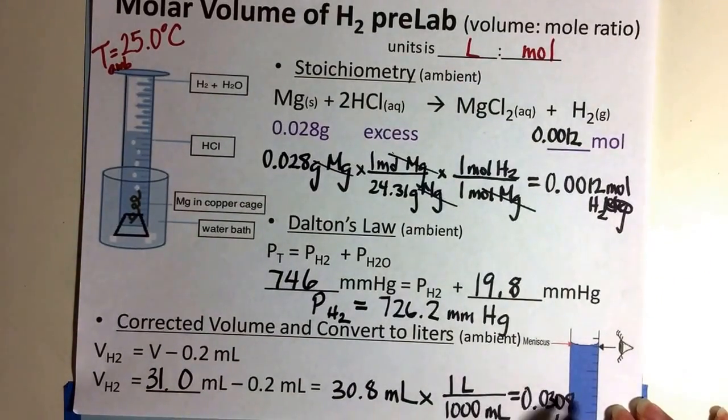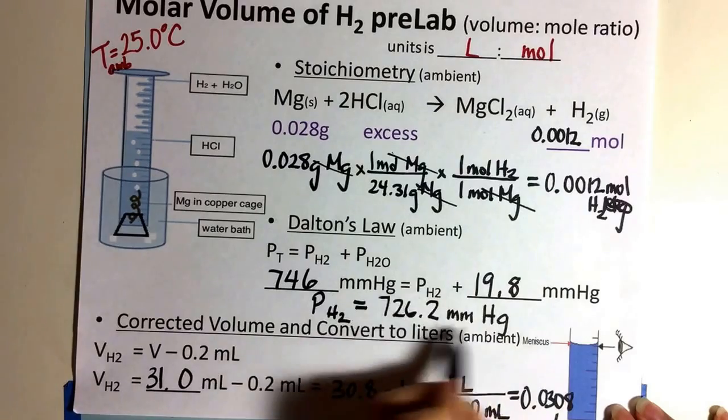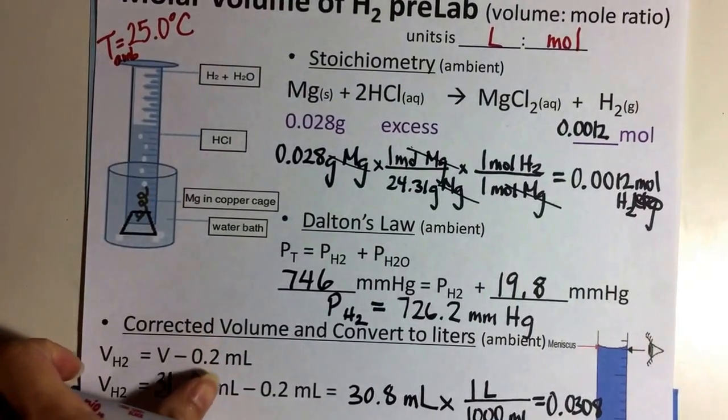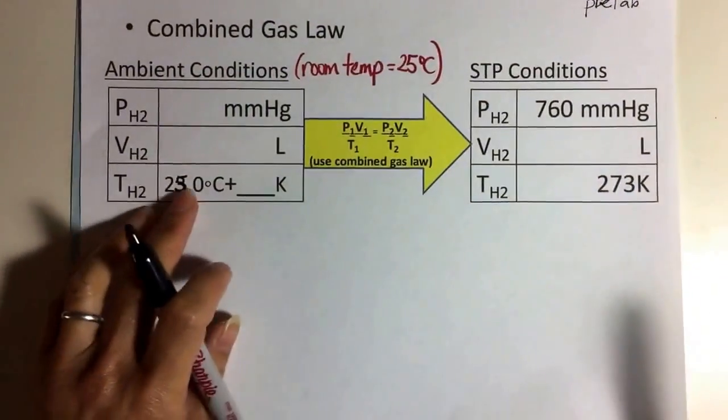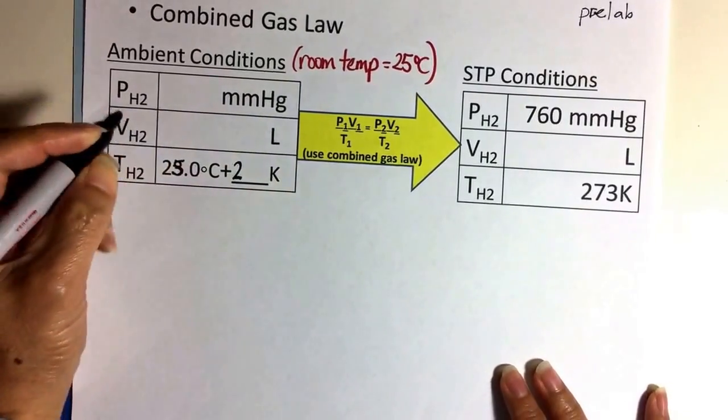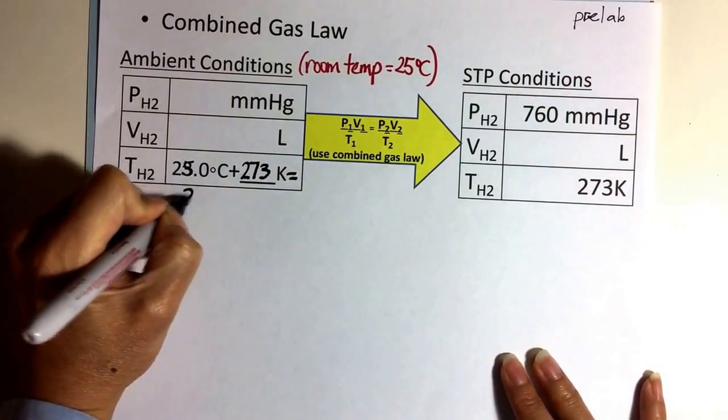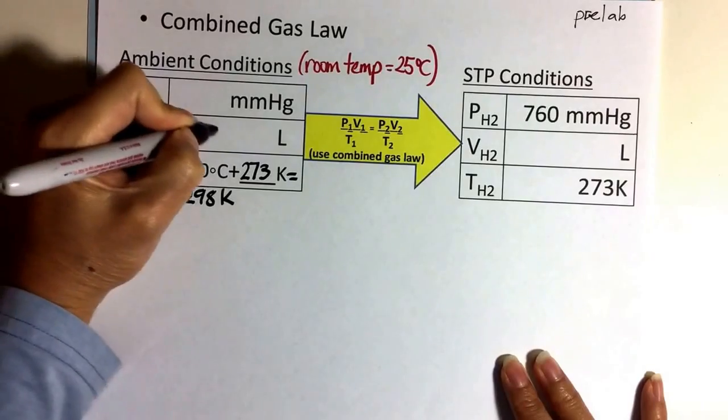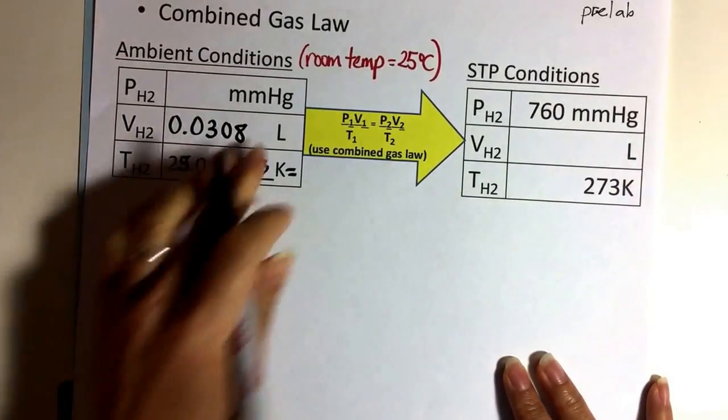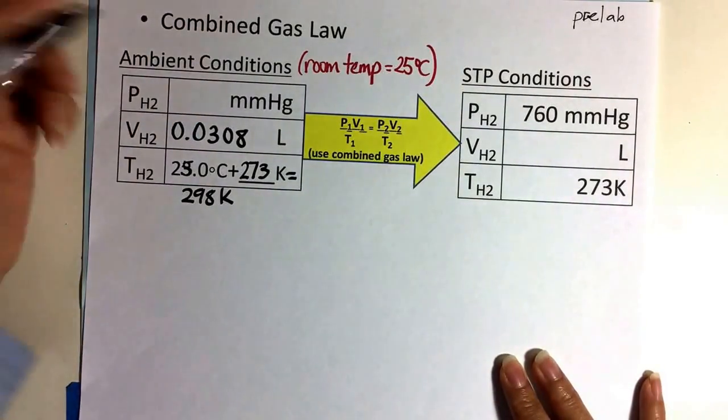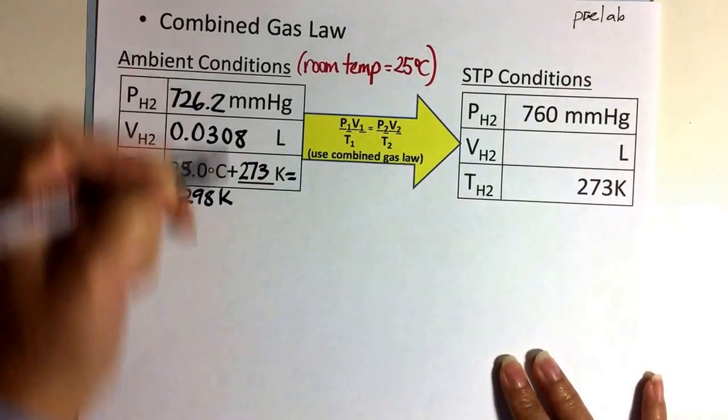Now I go and finish it up. So I put all this information. This is my ambient volume of my hydrogen gas. This is my partial pressure of my hydrogen gas at ambient condition. And then my ambient temperature is 25 degrees Celsius. So 25 degrees Celsius plus 273 is 298. The volume, the corrected volume is 0.0308. So I'm putting all my ambient condition information here. And then my corrected partial pressure of hydrogen after you remove water out of it is 726.2 millimeters of mercury. So I have all my ambient condition information.